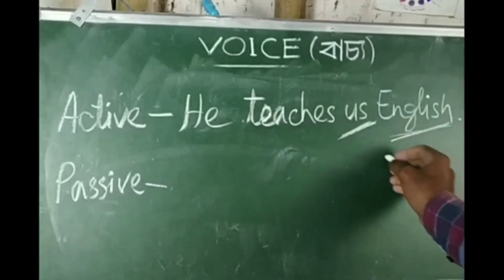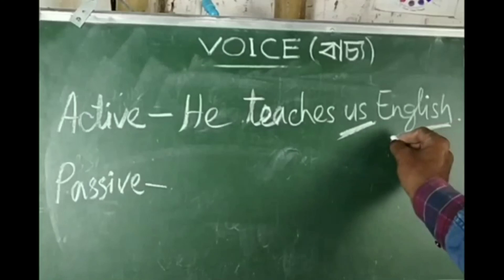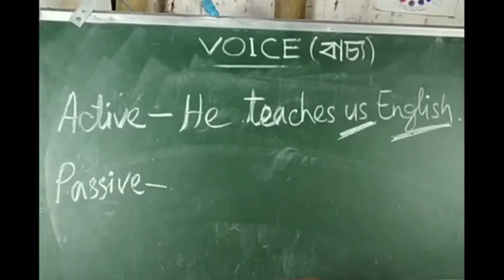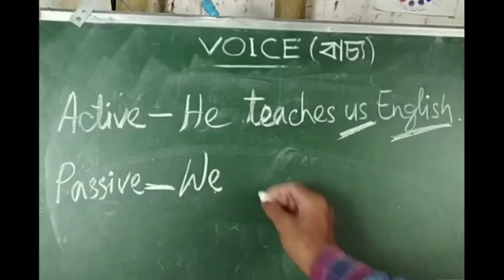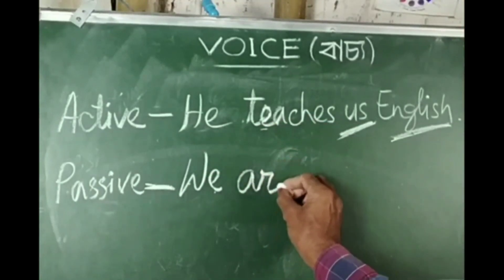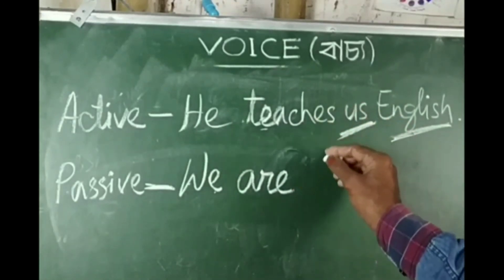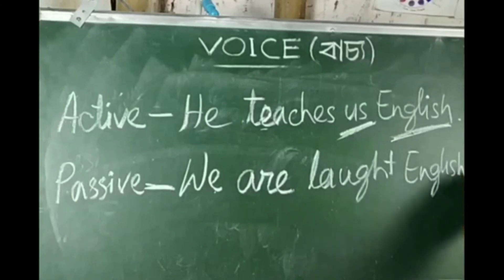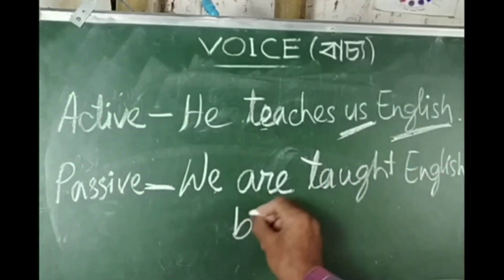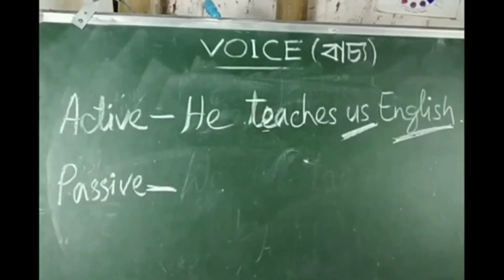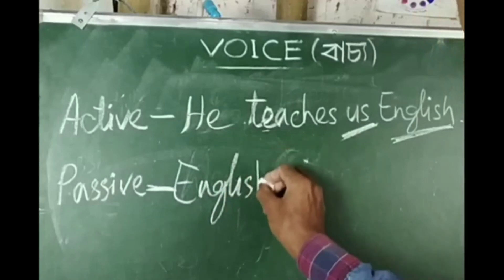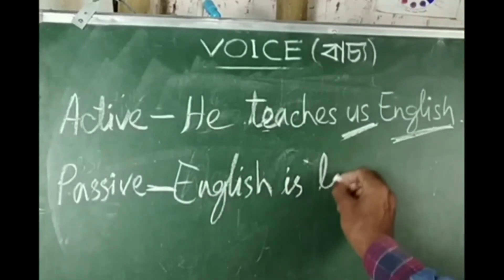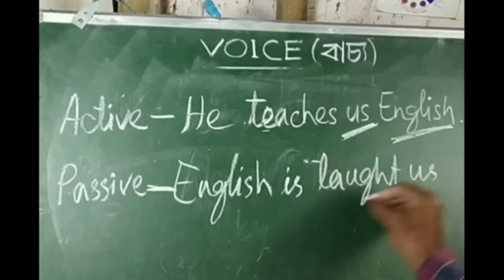Now consider: 'He teaches us English.' The object is 'English' and 'us'. The subject becomes 'we', which is plural. The passive form is: 'We are taught English by him.' Or: 'English is taught to us by him.' For example: 'We are taught English by 8.0' or 'I am taught English by him.'